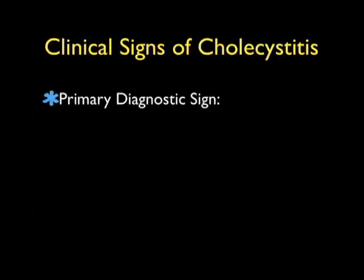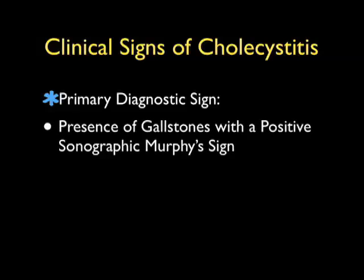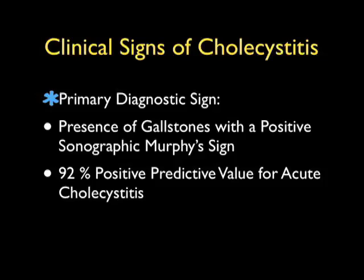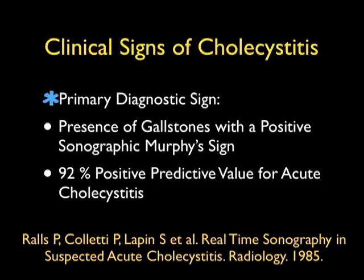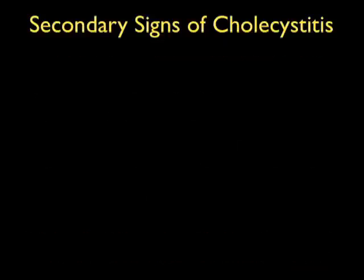What are the clinical signs of acute cholecystitis that we're examining for at the bedside of the patient with acute right upper quadrant abdominal pain? The primary diagnostic ultrasound finding is going to be the presence of gallstones with a positive sonographic Murphy sign, or tenderness over the gallbladder with pressure down on the ultrasound probe. These findings have a 92% positive predictive value for acute cholecystitis, as found in an article by Dr. Rawls et al. in Radiology — an older article from 1985, but one that's often mentioned in discussion of acute cholecystitis.